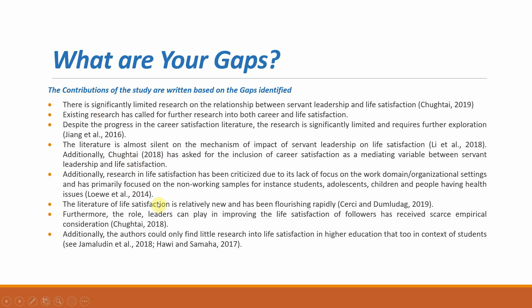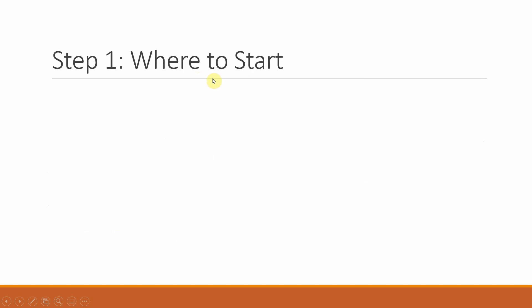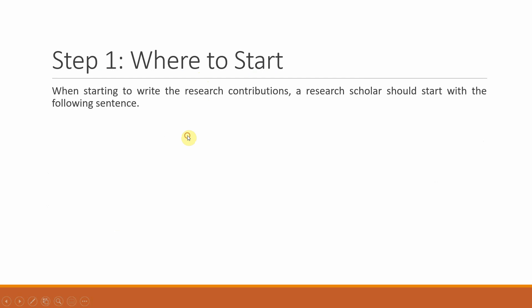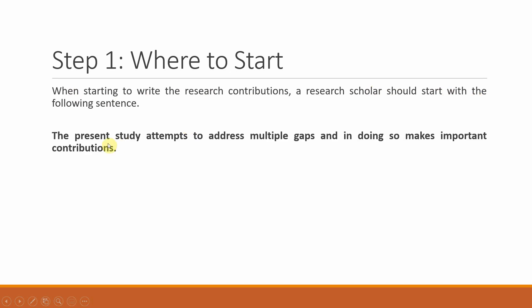Moving on, once you have clearly identified your gaps, the next step is: where do I start writing my contributions? Normally the contributions are written at the end of your introduction. So once you have identified the gaps in existing research, you start writing your contributions. The first thing is when starting to write the research contribution, a scholar should start with the following sentence: 'The present study attempts to address multiple gaps and in doing so makes important contributions.'